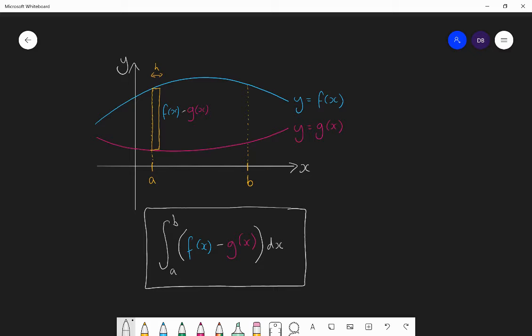It's important to know which one's the function above and which one's the function below. And we do the function above take away the function below. If we do it the wrong way around, all we'll get is actually the negative version of the answer. So it's not too big a problem if we do it the wrong way around. But it's nice to get it right the first time. So let's show this in action.